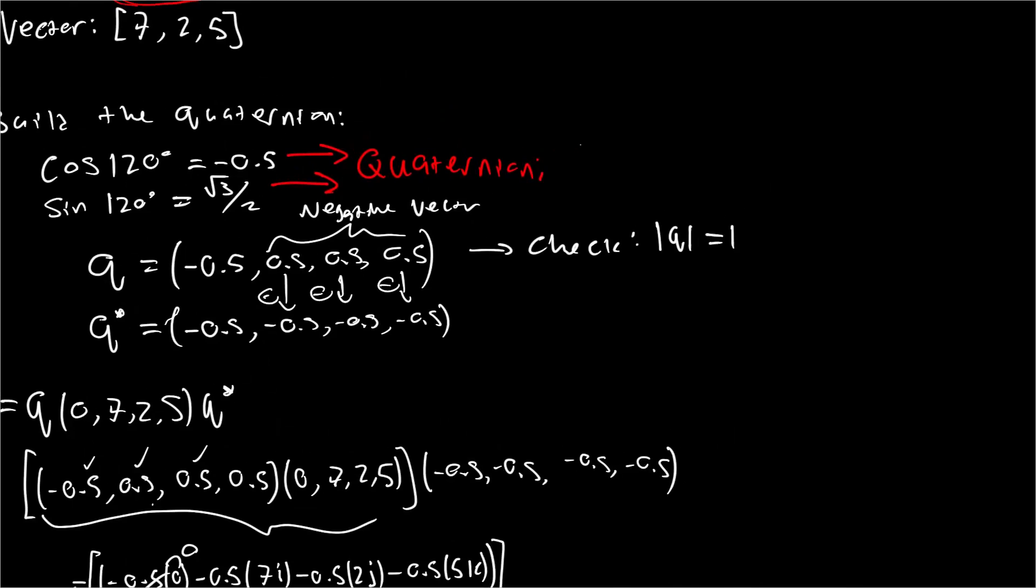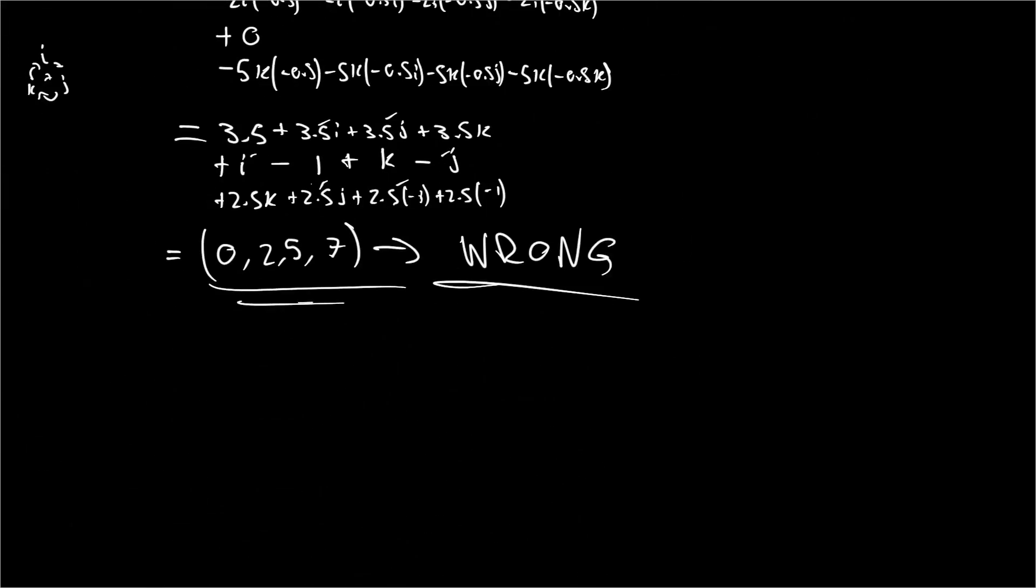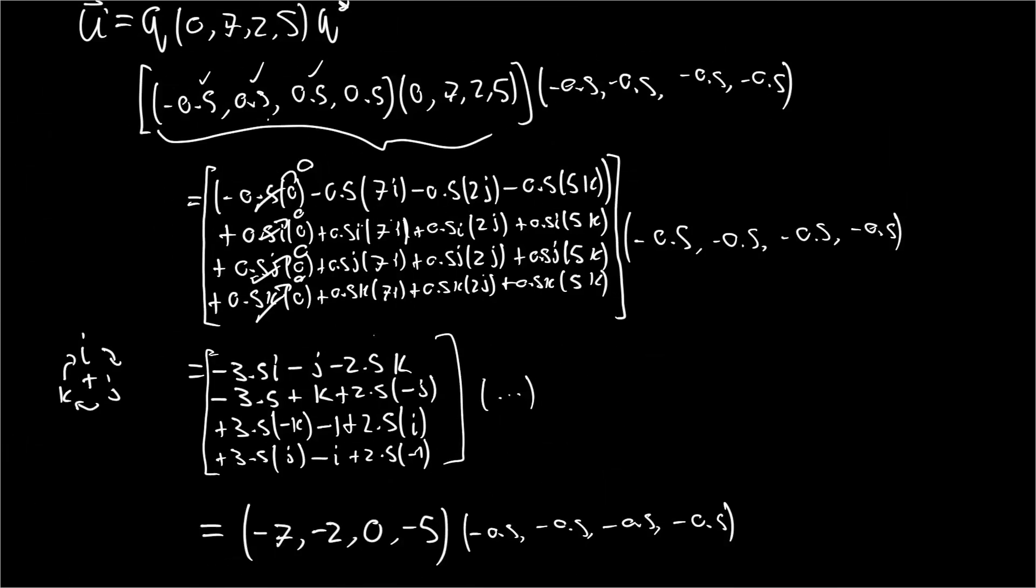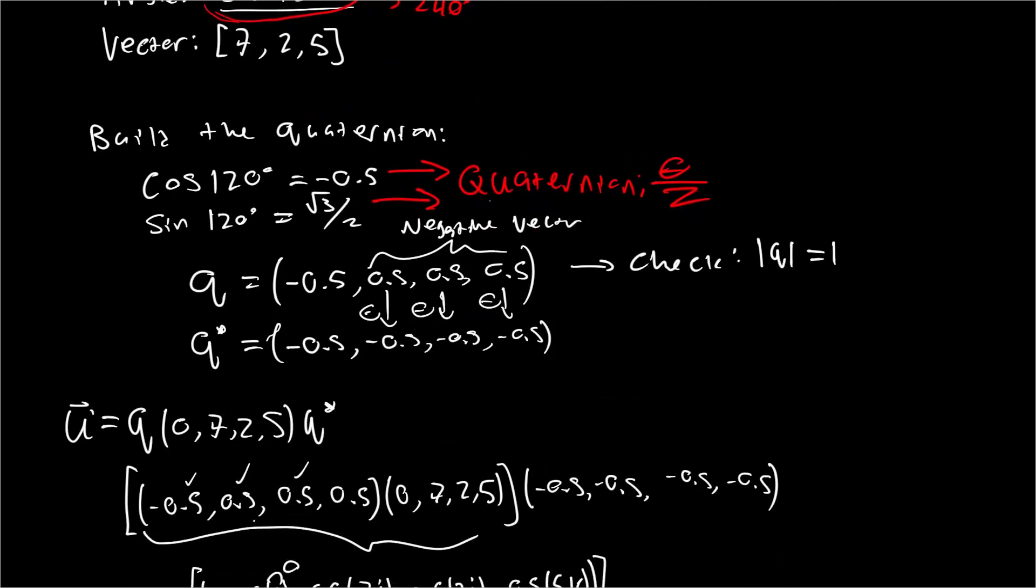Because for the quaternions, we need to be using theta over 2. We're doing half rotations. So what we just did, actually, with all this math, is we doubled the rotation. So basically this is for 240 degrees. I'm a bit rusty. I haven't actually done this in a few months. But basically, yeah, we accidentally rotated for 240 degrees. So what we would normally do, defining cos theta and sine theta, is we would do theta over 2. In this case, that would be 60 degrees.